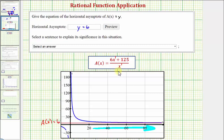When the degrees are the same, the equation of the horizontal asymptote is y equals the ratio of the leading coefficients, which in this case would be 6 divided by 1, or 6. If the degree of the numerator is higher, there is no horizontal asymptote. If the degree of the denominator is higher, the equation of the horizontal asymptote is A of x or y equals 0.